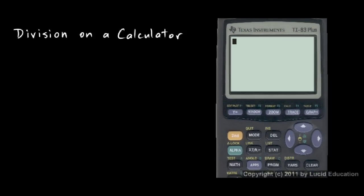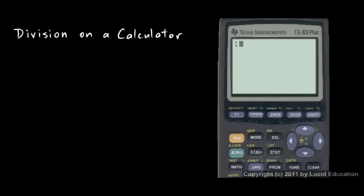For example, 15 divided by negative 3 would look like this: 15 divided by, and then you hit negative 3, and that should give us negative 5 for an answer, and it does.